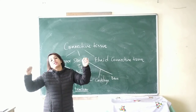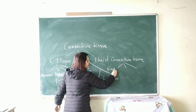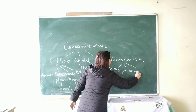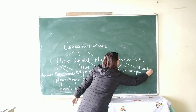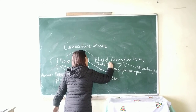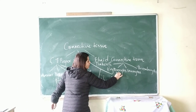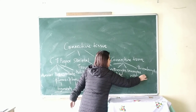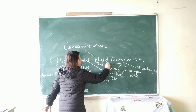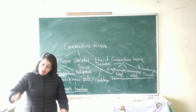Fluid connective tissue consists of erythrocytes (red blood cells), leukocytes (white blood cells), and thrombocytes (platelets), along with the fluid part which is the plasma. So blood has a cellular part — erythrocytes, leukocytes, and thrombocytes — and a fluid part, that is plasma.